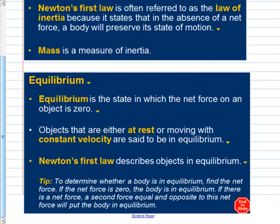Equilibrium is the state in which the net force is zero — no acceleration, no change in motion. That doesn't mean the object isn't moving; it just means there's no acceleration. An object moving in a straight line at constant velocity is in equilibrium. As soon as it starts turning, it's no longer in equilibrium and a force must be acting on it. Both an object at rest and an object moving at constant velocity are in equilibrium with net force zero.